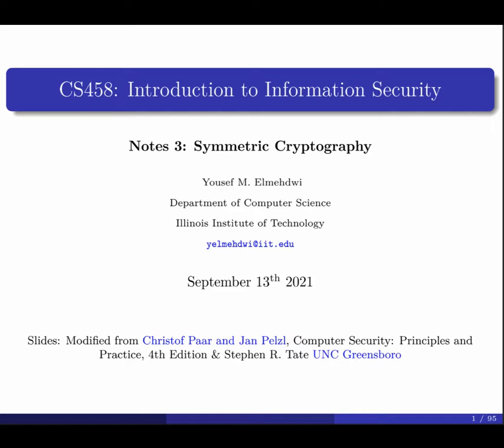We talked about ways to classify cryptography — based on the operation used to transform plaintext to ciphertext, it can be substitution or transposition. Based on the number of keys used, it can be a single key or more than one key. Based on how the plaintext is processed, we'll start discussing modern symmetric cryptography today — specifically block ciphers and stream ciphers.